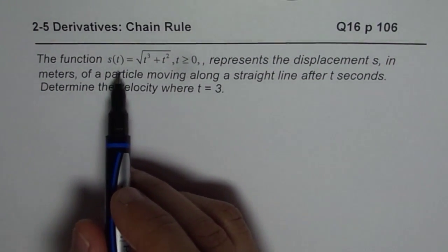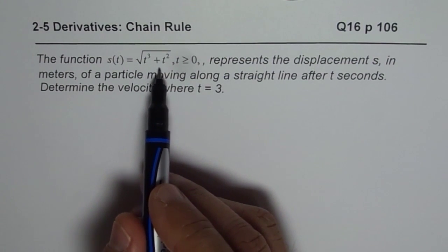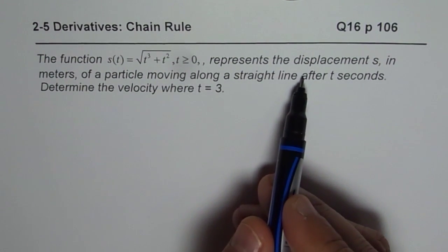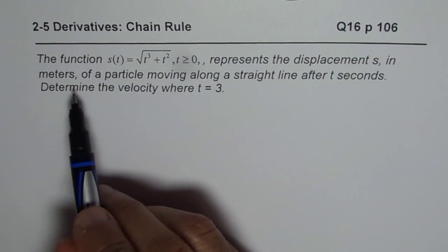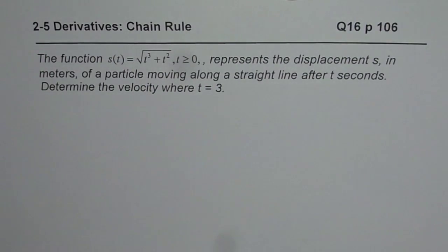The function s(t) equals square root of t cube plus t square, where t is greater than or equal to 0, represents the displacement s in meters of a particle moving along a straight line after t seconds.